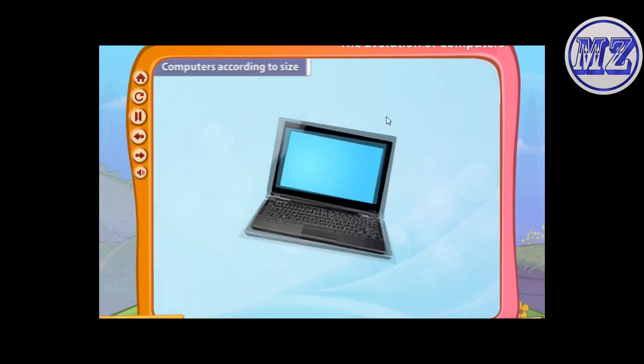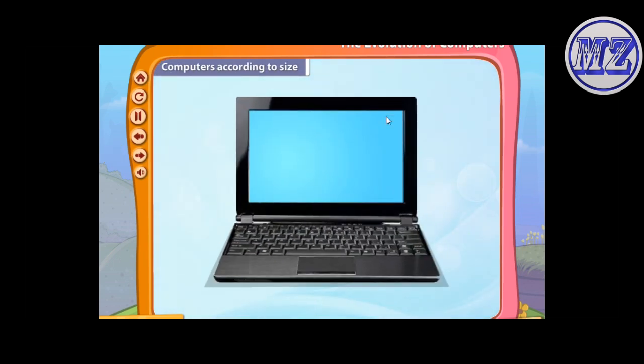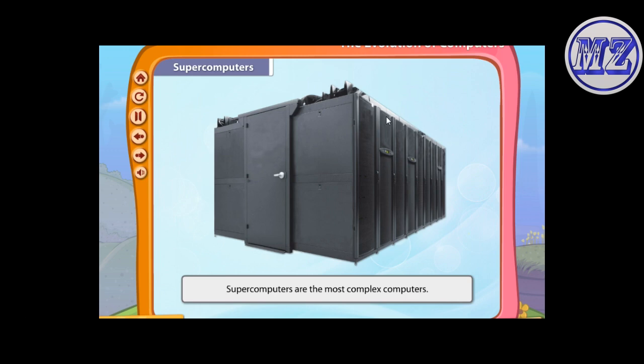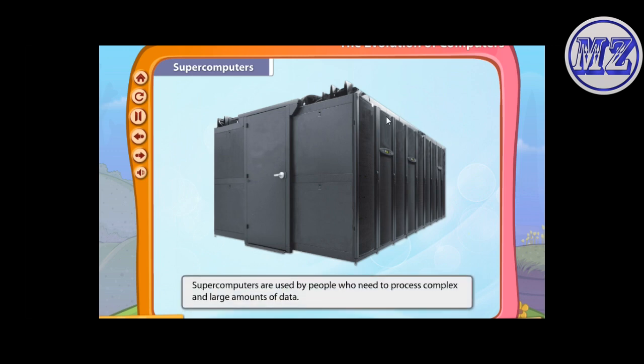Computers are made in different sizes so that different people can use them for different purposes. Supercomputers are the most complex computers. They are used by people who need to process complex and large amounts of data, solve complex numerical problems, make forecasts, and analyze scientific or engineering problems.